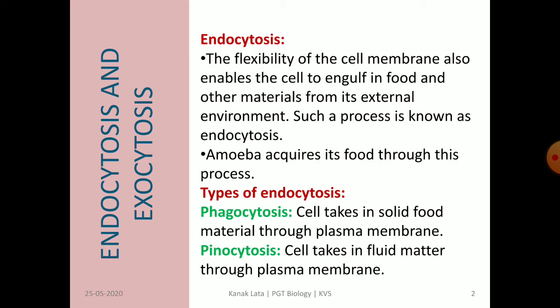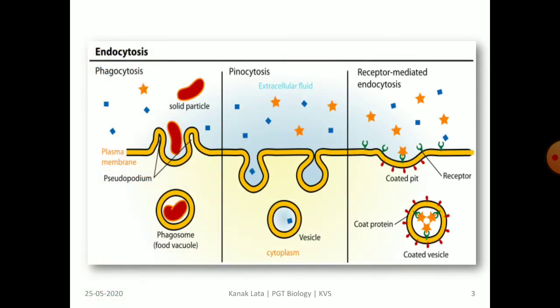One is phagocytosis and the other is pinocytosis. In phagocytosis, cells take in solid food material from the plasma membrane, and in pinocytosis, the cell takes in fluid matter from the plasma membrane. This figure shows both types of endocytosis. In phagocytosis, solid particles are taken in, whereas in pinocytosis, fluid material is taken inside the cell.